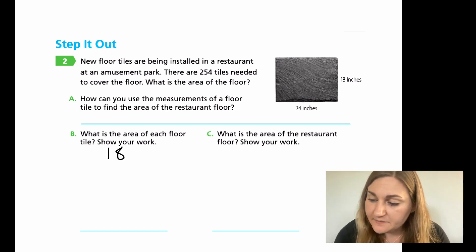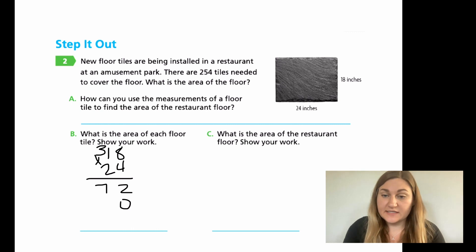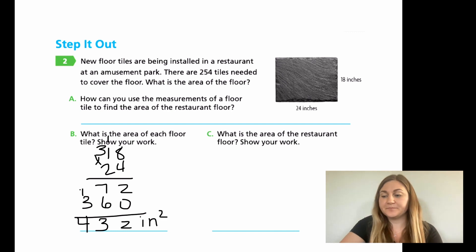So 18 times 24 is going to be 32. 8 times 4 is 32. Carry the 3. 4 times 1 is 4 plus 3 is 7. Placeholder 0 moving into the tens place, multiplying by 2. 2 times 8 is 16. Carry that 1. 2 times 1 is 2 plus 1 is 3. When you add them together, you're going to get 2, 13, carry the 1, and 4. So this is going to be 432, and this is actually inches squared.